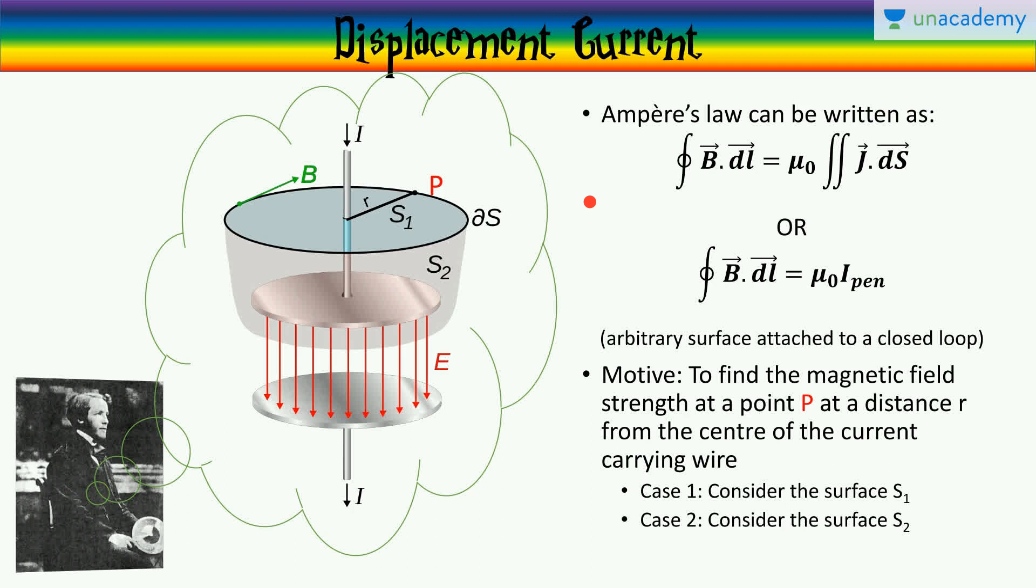Or it can also be written in a simpler fashion, as the closed line integral of B dot dl is equal to mu naught I_pen, where I_pen is the current penetrating through an arbitrary open surface attached to a closed loop around which you are trying to measure the magnetic field.